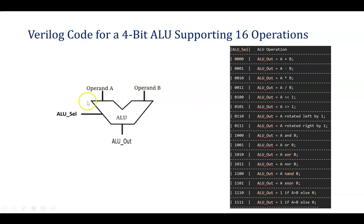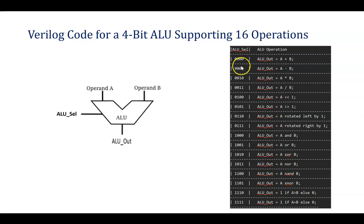Two operands are there on which different operations, depending upon ALU select, will take place and output will be seen. ALU select is of 4-bit, from 0000 to 1111, that way 16 operations will be performed. Depending upon number of bits of ALU select you will be performing operations. In our case it is 4-bit, that's why maximum 16 operations will be performed. If you want to perform 8 operations, you can give select line as 3-bit, performing from 000 to 111.